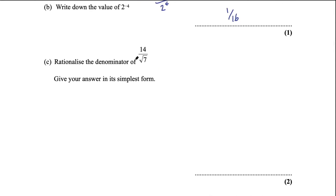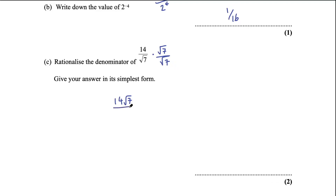Part c: rationalize the denominator of 14 over √7. We need to multiply by the surd part of the denominator — root 7 over root 7. 14 times √7 is 14√7 on the top. √7 times √7 is 7 on the bottom. Then 14 divided by 7 is 2, so the final answer is 2√7.